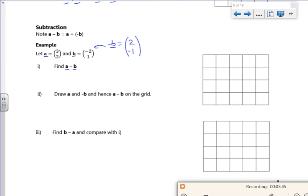So a minus b, so a is 3, 2. Minus b, which is minus 2, 1. So along the top is 3 minus minus 2, which is 5. And 2 minus 1, which is 1.